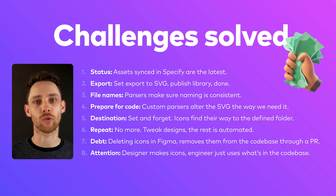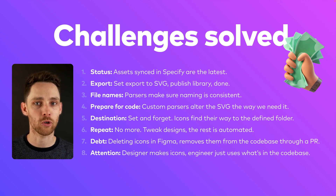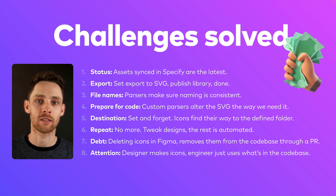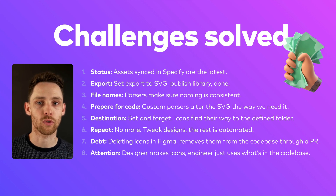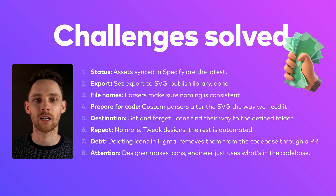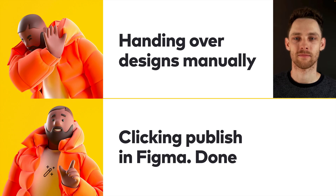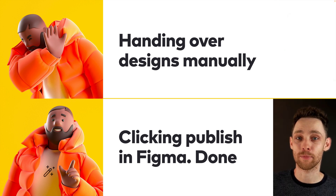All of the existing challenges are now solved with this new workflow powered by a design API. Assets in Specify are always the latest. Exporting is handled in an automated way. A parser makes sure we have consistent file names. Another parser prepares the SVG file for production. Once the rules for the destination are set, you can forget about them — icons find their way to the correct folder automatically. No more repetitive tasks for handover: tweak an icon in Figma and the rest is automated. No more old icons in the codebase either — once deleted in Figma, they also get deleted from GitHub after approval. No more attention required from multiple people to make sure the process is followed correctly. No more handing over designs manually — automation-powered handovers triggered right from Figma. Click publish and you're done.